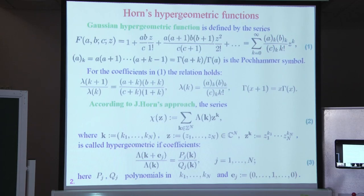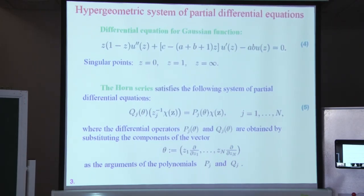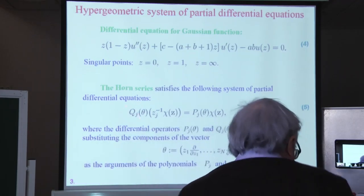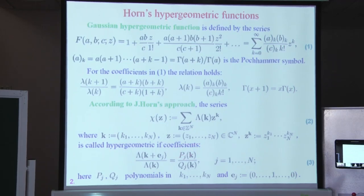This property of coefficients implies some interesting properties. The Gaussian hypergeometric function satisfies the differential equation 4, which is a Fuchs-type equation with three singular points: 0, 1, and infinity. At the same time, the Horn hypergeometric series as a function in n variables satisfies the system of partial differential equations 5, where Q(θ) and P(θ) are differential operators obtained by substituting the components of the vector θ into the polynomials Q and P.